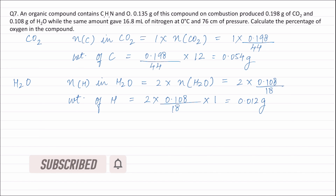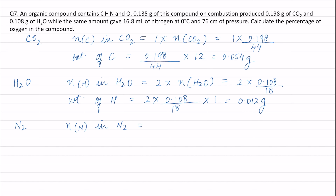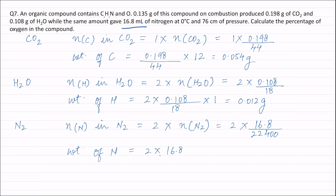The molecular formula for nitrogen is N₂. One mole of nitrogen gas contains two moles of nitrogen atoms, so moles of nitrogen = 2 × (volume of N₂ / molar volume) = 2 × (16.8 mL / 22400 mL). Weight of nitrogen = 2 × (16.8 / 22400) × 14 = 0.021 gram.